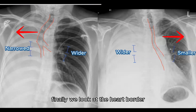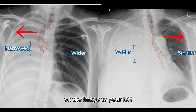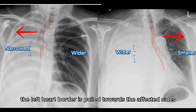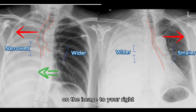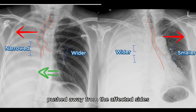Finally, we look at the heart border. On the image to your left, the left heart border is pulled towards the affected site. On the image to your right, the heart border is however pushed away from the affected site.